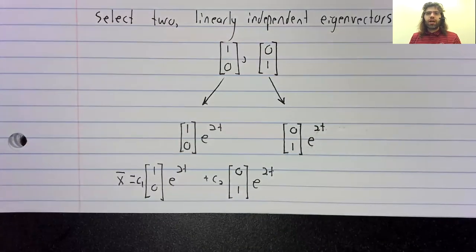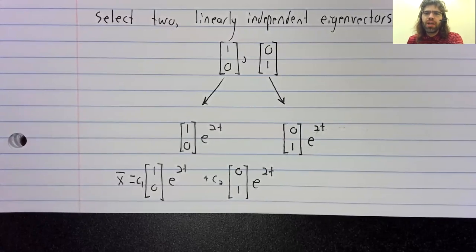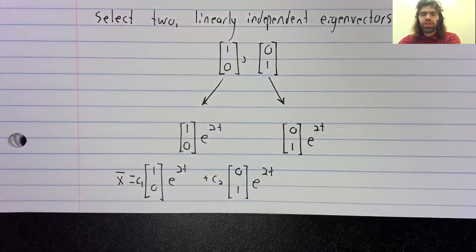And we're done. The fact that we only had one eigenvalue didn't cause us any trouble at all. We still found two linearly independent eigenvectors, which gave us two linearly independent solutions, and we used them to create a general solution.